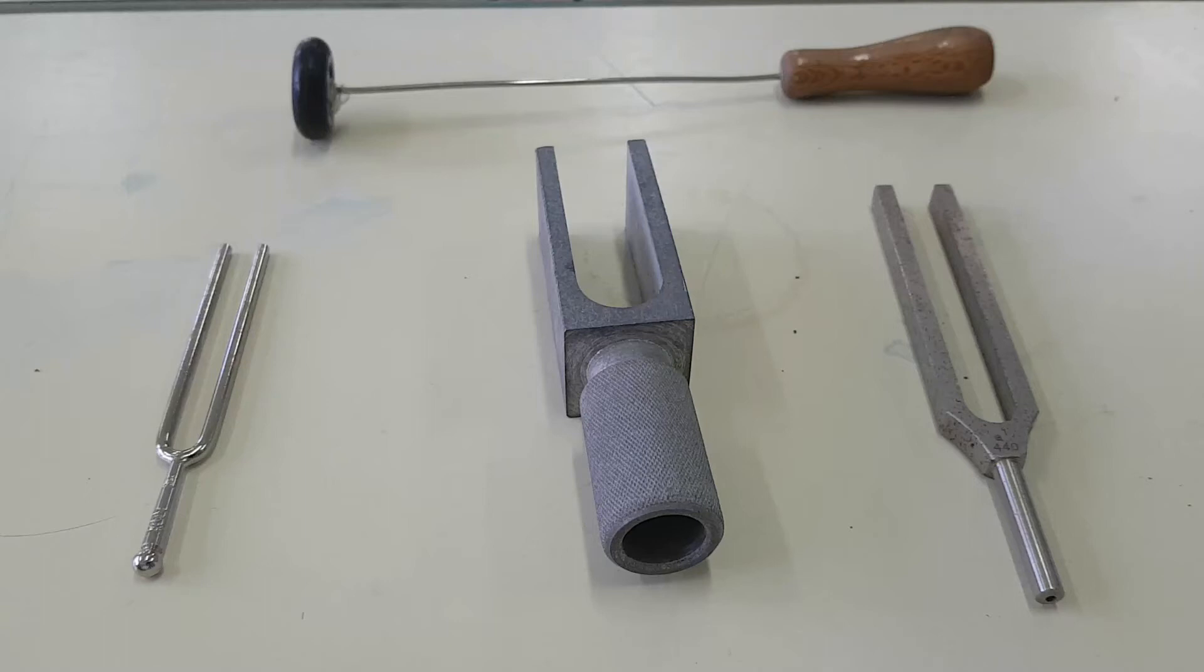These are different types of tuning forks. A tuning fork is a U-shaped metal device that produces a sound of a certain frequency when struck.